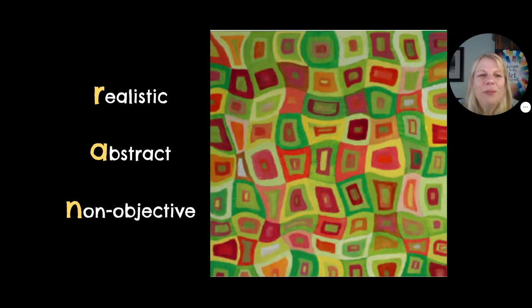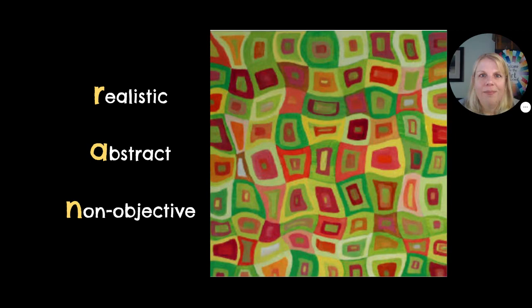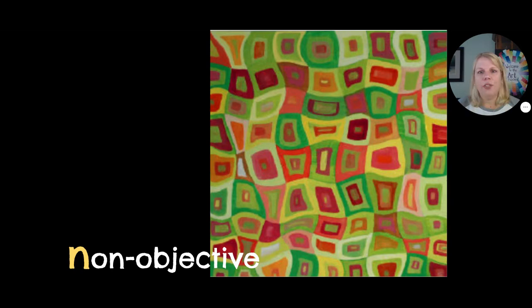Realistic, abstract, non-objective — R, A, N. Not objective. It's not a picture of anything. This kind of art is very popular and very decorative — it's beautiful to put in your home. You can see lots of interesting things going on, but it's not a picture of anything. Just shapes, just colors. Still awesome.